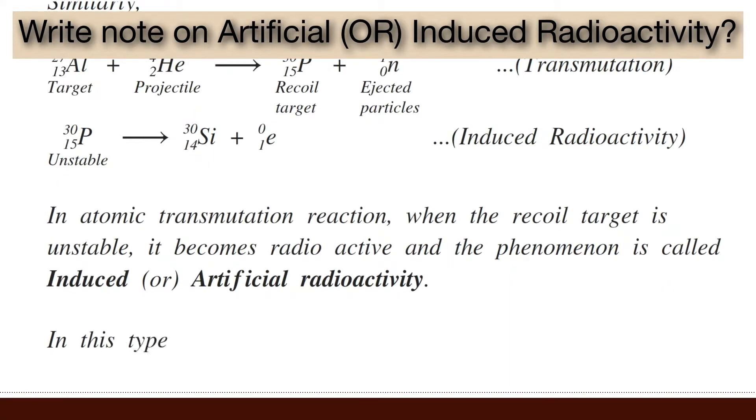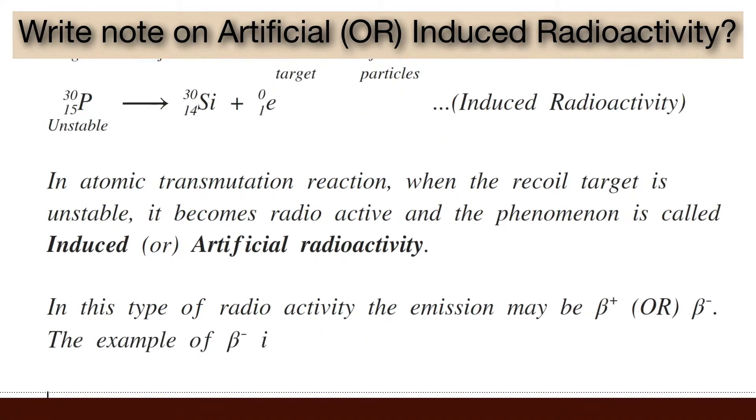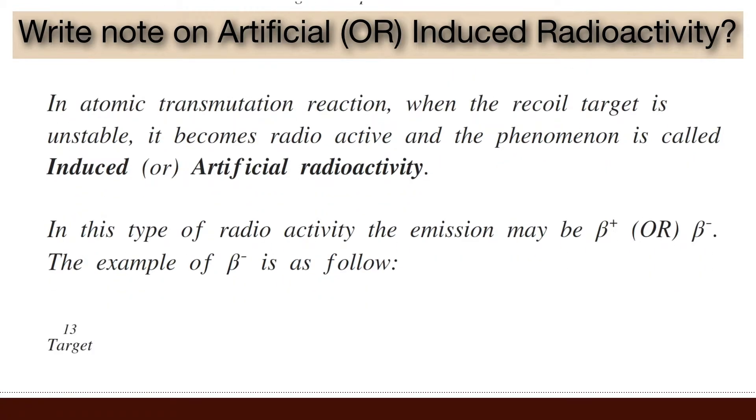In this type of radioactivity, the emission may be positron or electron. The example of electron is as follows: aluminium-27,